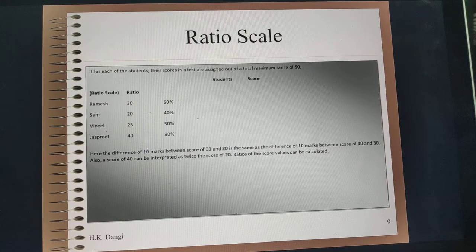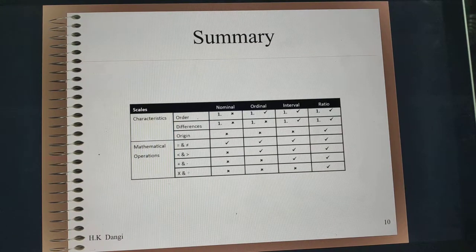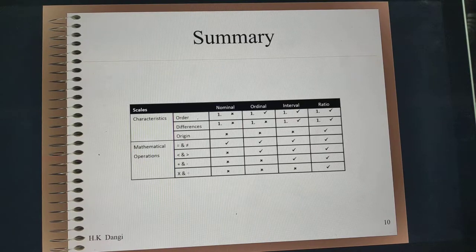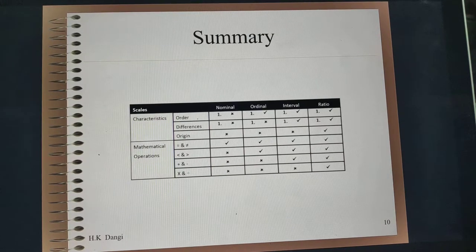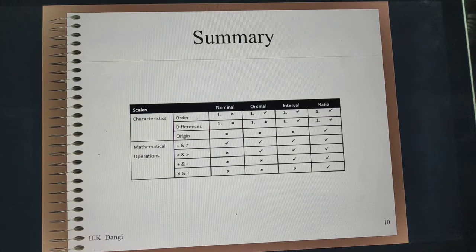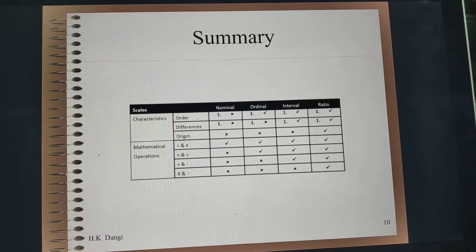In this slide we have summarized how these various scales can be compared based on their properties. For example, order is not possible in nominal data, however it is possible in ordinal data. Differences are not possible in nominal or ordinal data. Statistically speaking, all mathematical operations are possible in ratio data, which may not be the case for nominal data. From a statistics point of view, getting responses on ratio or interval data is always desirable compared to nominal and ordinal data.